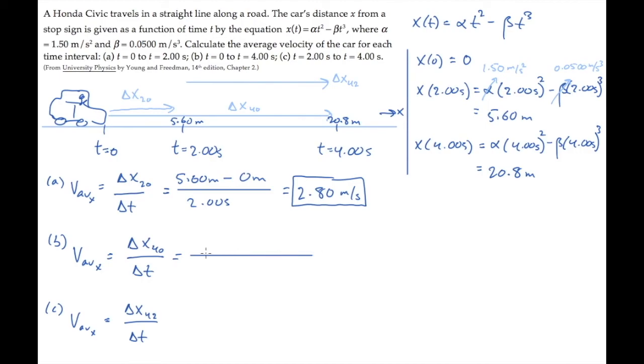In part b, the final time is 4 seconds and the initial time is 0. So we substitute those positions divided by the elapsed time, 4 seconds, to get 5.20 meters per second.